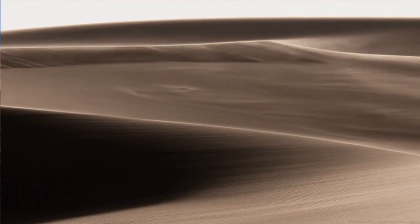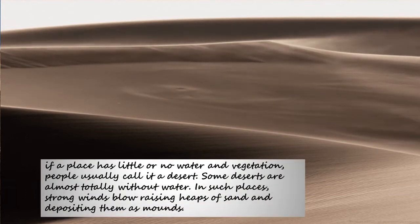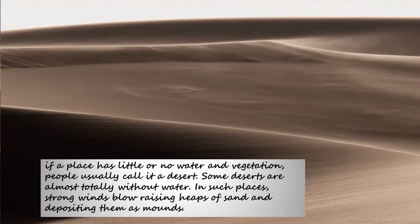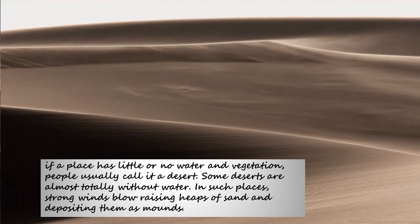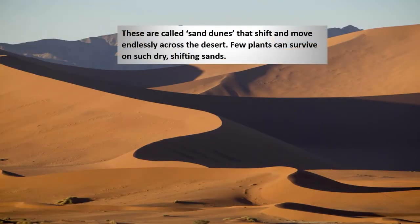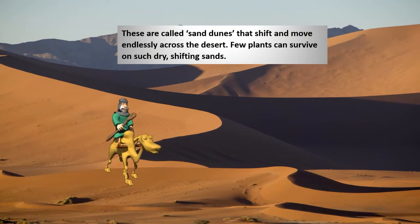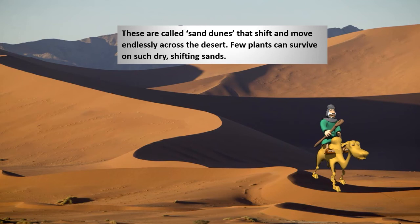A desert can be as hot as Thar, or as cold as Ladakh. In general, a place with little or no water and vegetation can be called a desert. Some deserts are completely without water. Strong winds flow in such areas causing the rise of heaps of sand and depositing them as mounds called sand dunes. These sand dunes keep shifting through the desert, making it unsuitable for most plants to grow.